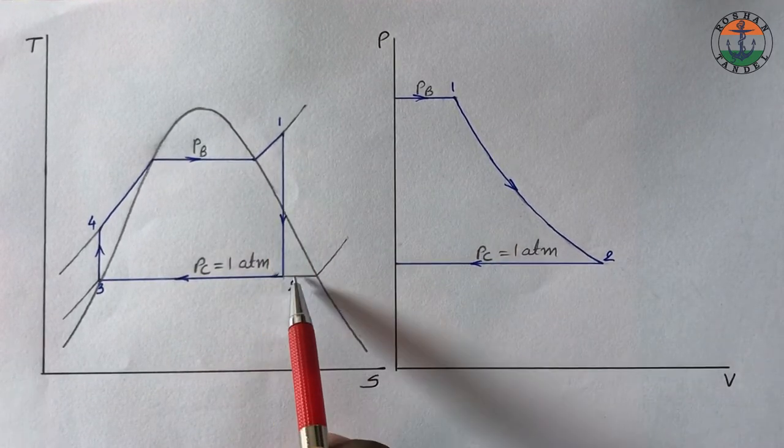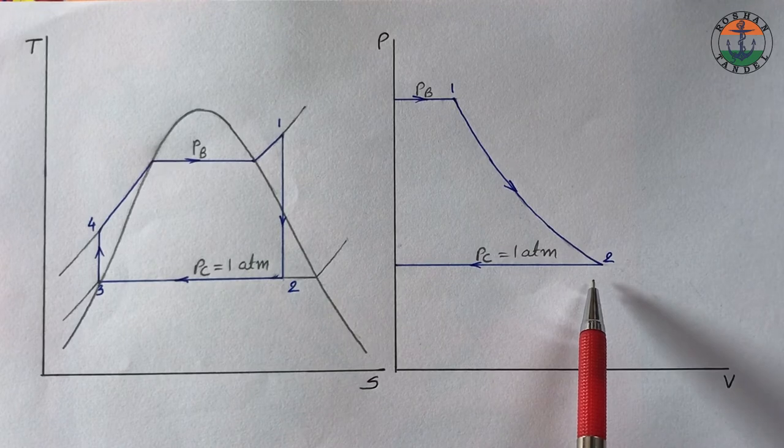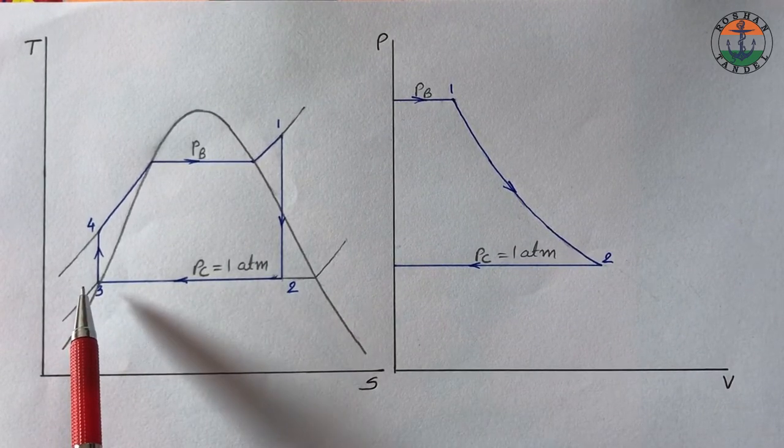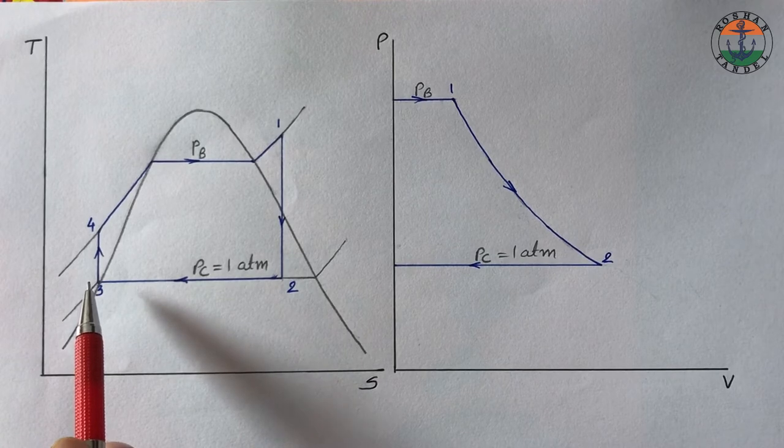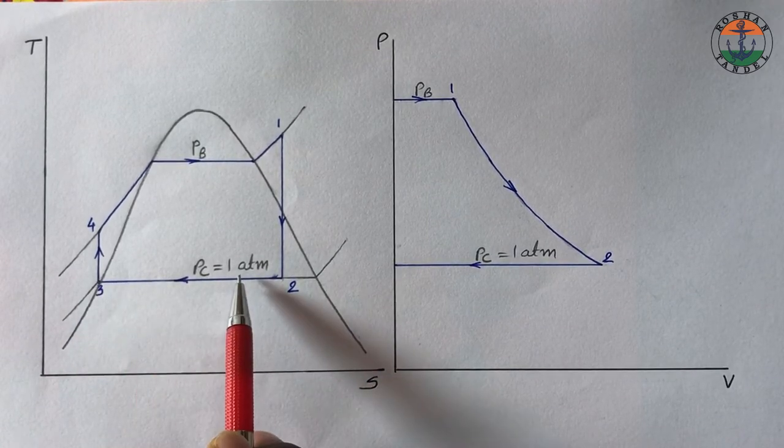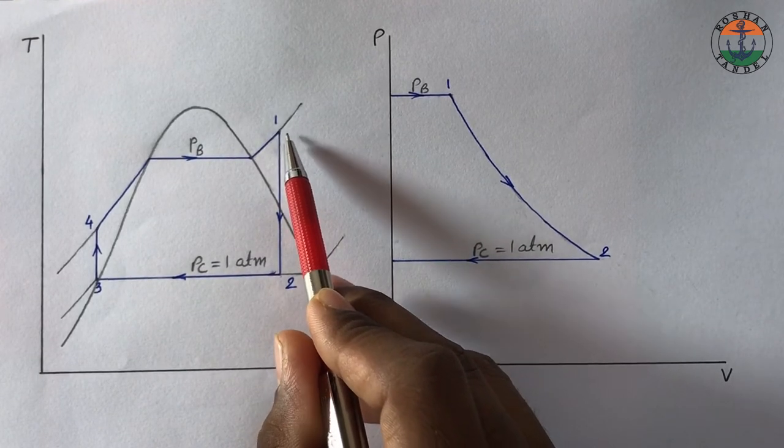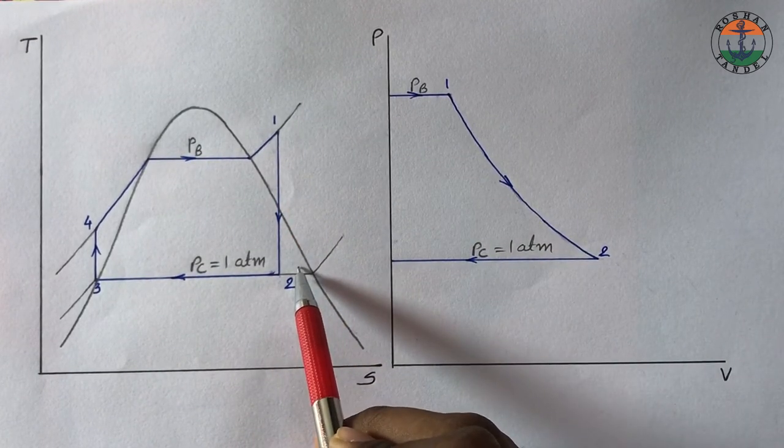1 to 2 is expansion in steam turbine, and 2 to 3 is heat rejection at constant pressure in the condenser. Turbine work is calculated as H1 minus H2.